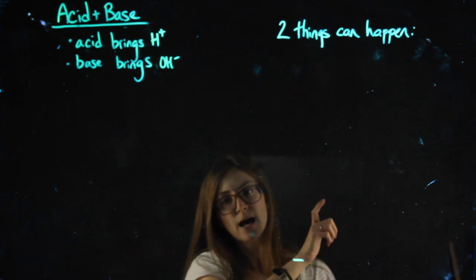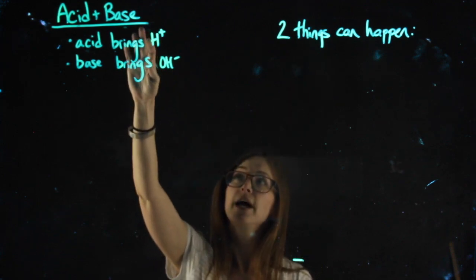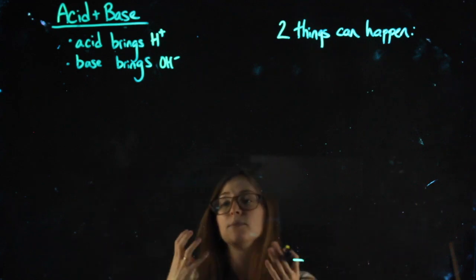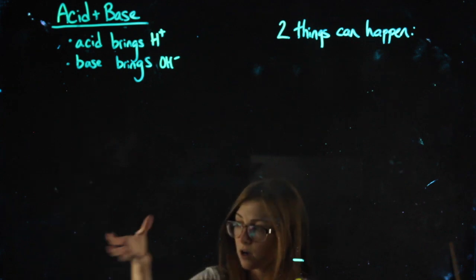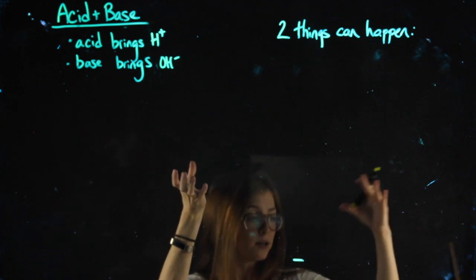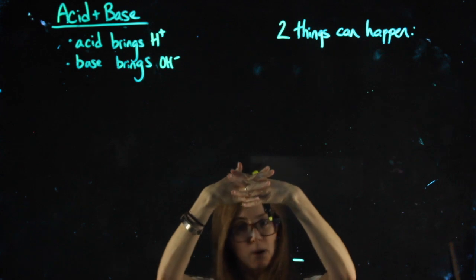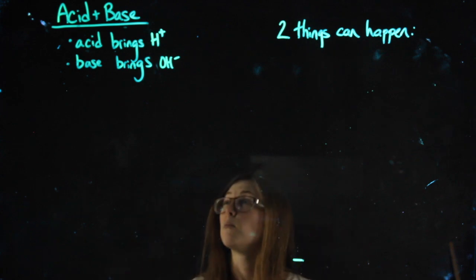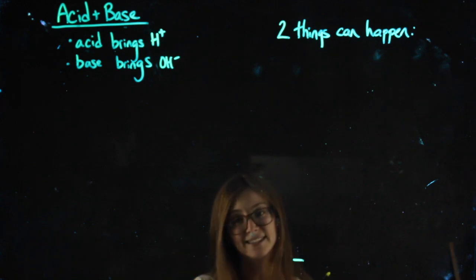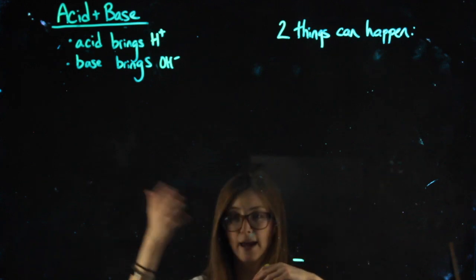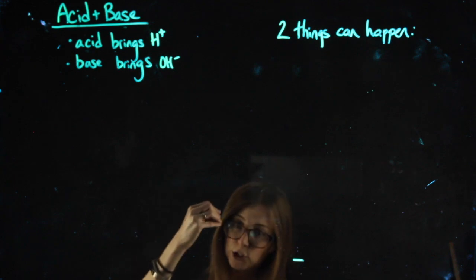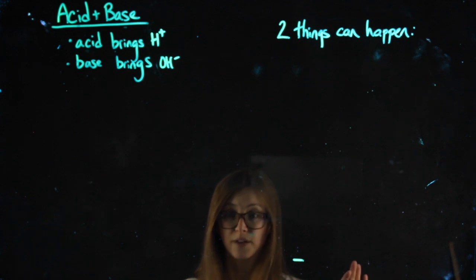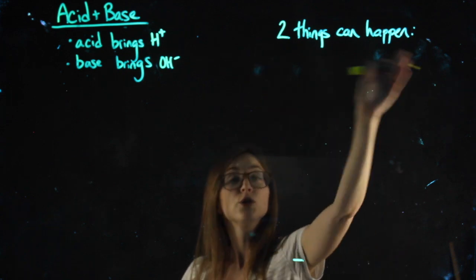We can have two different things happen based on how much H+ and OH- are brought from the acid and base. If I have one H+ ion and one OH- ion, they can bond together and create water, which would be neutral. We wouldn't end up with an acid or a base. But that's if we have equal parts H and OH, so for every H there's an OH to bond with it, neutralize it, and leave us not with an acidic solution.